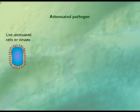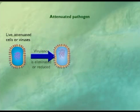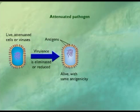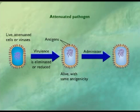A second traditional approach is to use an attenuated strain of the pathogen. During attenuation, the pathogen loses its virulence but retains many of its antigens and is therefore able to elicit an immune response.